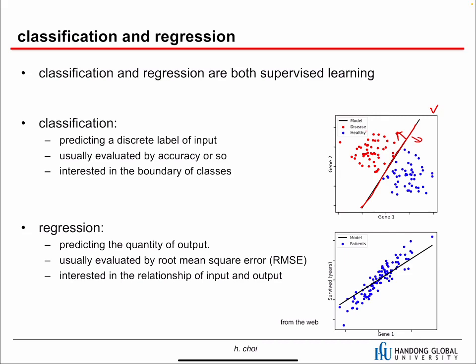Regression predicts the quantity of output, so it is interested in the relationship between input and output. For example, input could be height and output could be weight. Regression is usually evaluated by root mean square error — how different the prediction is compared to the label.